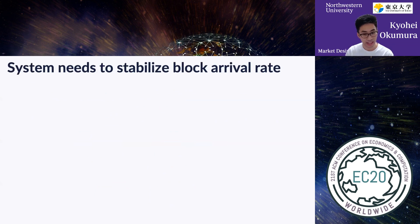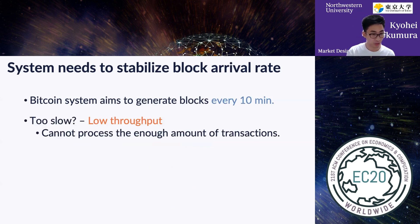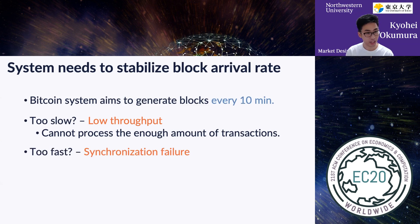Miners are totally selfish and they don't care about the behavior of the whole system. However, there is a goal that the system must achieve: Bitcoin aims to generate blocks every 10 minutes. Why 10 minutes? If it's too slow, the system suffers from low throughput — it cannot process enough transactions, which is problematic for an electronic payment system. And on the other hand, if it's too fast, the system suffers from synchronization failure.